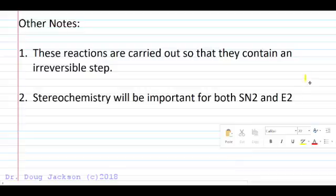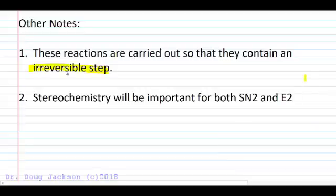Remember, these reactions are carried out so that they contain an irreversible step. We avoid the complications of rearrangements, expansions, and bond migration to a more stable alkene for elimination reactions. We can retain stereochemistry because of this. For both SN2 and E2, we've got to think about SN2 inversion of configuration if a chiral center is our point of attack, and we've also got to think about antiperiplanar elimination for E2 reactions.